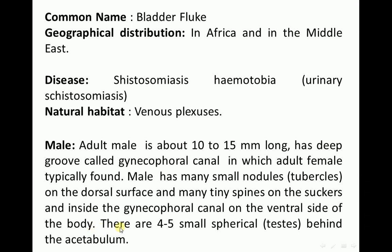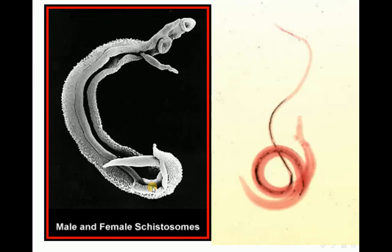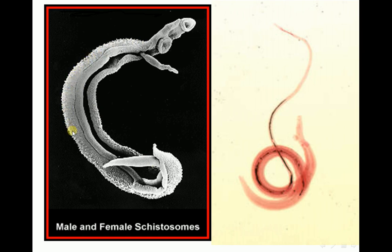The male has four to five small spherical testes behind the acetabulum. In this image, we can see the male — the oral suckers and ventral suckers or acetabulum on the ventral surface of the body. These suckers are surrounded by tiny spines, which can also be found in the gynecophoreal canal. The dorsal surface of the male has nodules or tubercles.